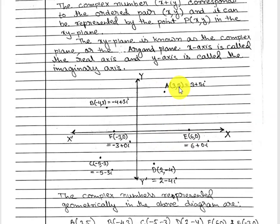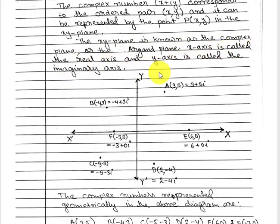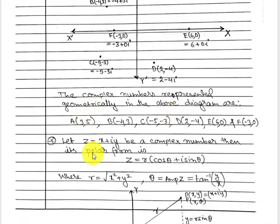Minus 4 plus 3i is a complex number. To denote it geometrically, you can represent it as the point (−4, 3), where your real part is always represented on the x-axis and the imaginary part on the y-axis. The XY plane is known as the complex plane or the Argand plane. The x-axis is called the real axis and the y-axis is called the imaginary axis.